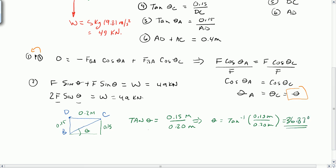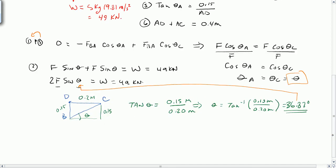I can plug that back into the previous equation here and solve for F. And I get F equals 49 kN divided by 2 sine of 36.87 degrees. F equals 40.83 kN.